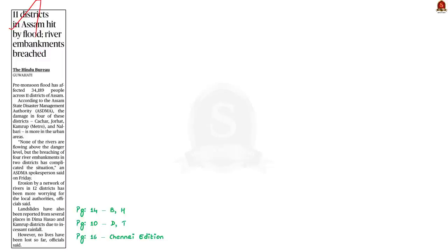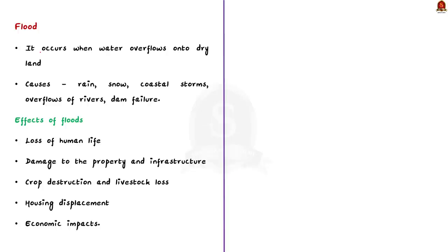Let's start with what is a flood. A flood happens when water overflows onto land that is normally dry. Floods can result from rain, snow, coastal storms, overflow of rivers, dam failure, and so on. Some of the effects of floods include loss of human life, damage to property and infrastructure, crop destruction and livestock loss, housing displacement, and other economic impacts.